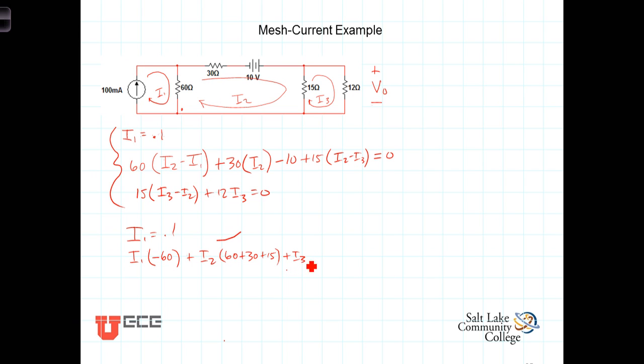And then for i3, we have just one i3 term with a minus sign being multiplied by 15, so minus 15. And then we've got this constant voltage here of a minus 10 we bring to the other side as a plus 10. So there's our second equation with the terms combined.